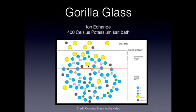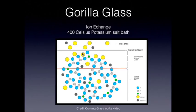What happens at the atomic level is that the sodium ions in the surface of the glass are replaced by the larger potassium ions. The potassium ions are represented by yellow circles and the sodium ions by dark gray circles. In the surface portion of the glass you can see a relative preponderance of potassium, and in the deeper layers there remains a preponderance of sodium.